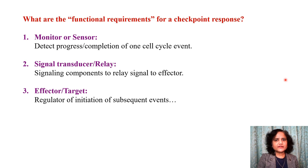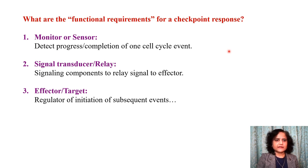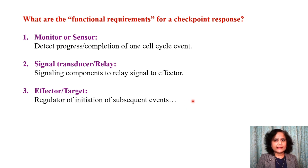What are the functional requirements for a checkpoint response? The most important component is a monitor or sensor, which detects the progress or completion of one cell cycle event. You also need signaling components to relay the signal from the sensor to the effector. The effector is a regulator of the initiation of subsequent events, and it ultimately acts to stop cell cycle progression.